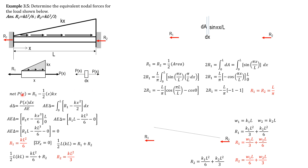The net p(x) equals r1 minus the area of the triangle, which is one-half of kx times x. From summation of forces in x equals 0: p(x) plus one-half x·kx equals r1. From mechanics of materials, the formula for deflection is force times length over AE. Since we consider a differential element, the corresponding deflection is also in differential form, d-delta, so that the force just to the left and just to the right over that section remains the same.